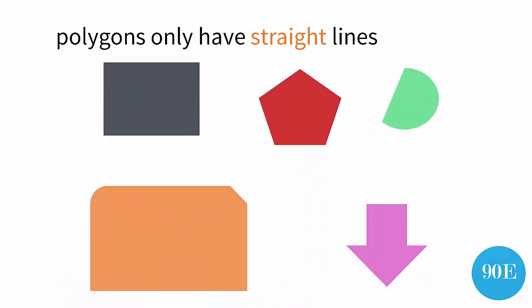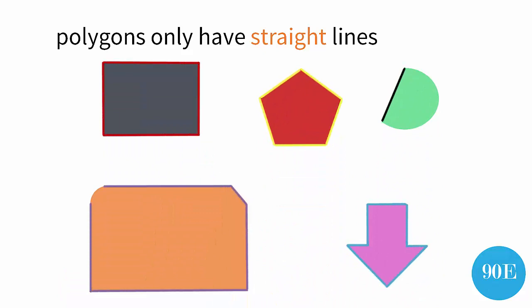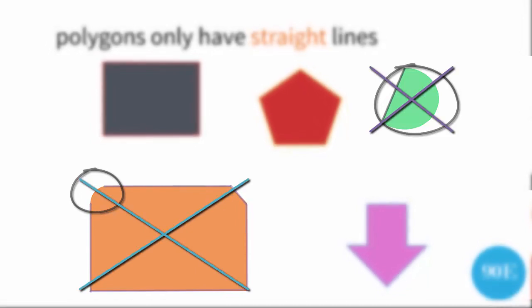How about these shapes? As you can see, they've all got straight lines to them. But these two shapes have got curves as well, and because a polygon can only be made up of straight lines, these two shapes cannot be called polygons.